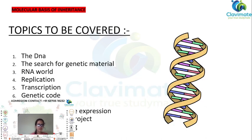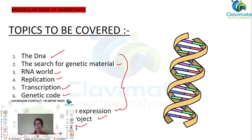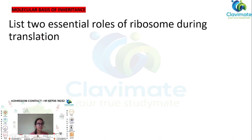Some of the topics to be covered in this chapter are: DNA and the search for genetic material, RNA, replication, transcription, genetic code, translation, regulation of gene expression, human genome project, and DNA fingerprinting. These are some of the important things you need to cover in this chapter.